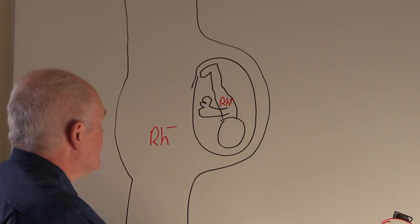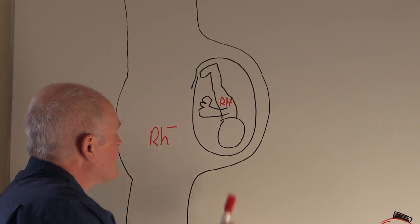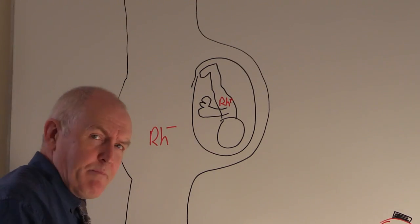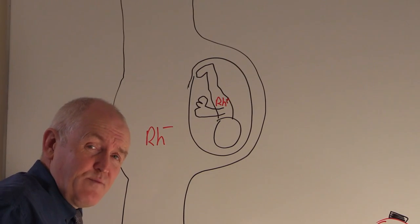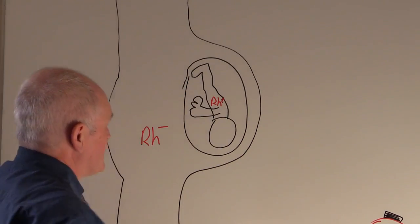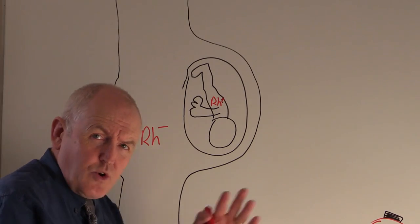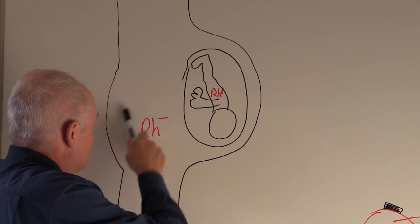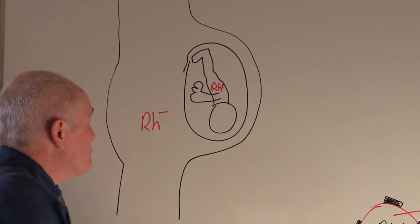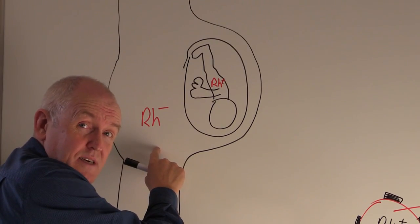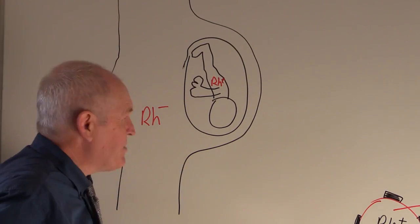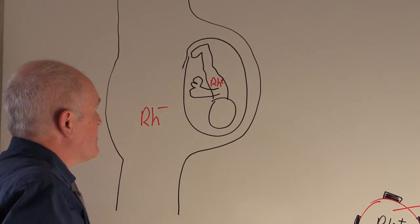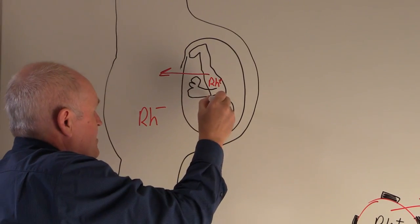The risk is that we get fetomaternal haemorrhage — blood leaking from the fetus into the mother's maternal circulation. This doesn't usually happen in the first part of pregnancy, but it can happen towards the end. During delivery, it's guaranteed that some of the fetal blood via the torn placenta gets into the mother. In a first pregnancy with a Rhesus negative mother, the mother will not have any Rhesus factor antibodies, as long as she hasn't been exposed to Rhesus positive blood before. Some of the Rhesus positive fetal red cells will get into the maternal circulation.